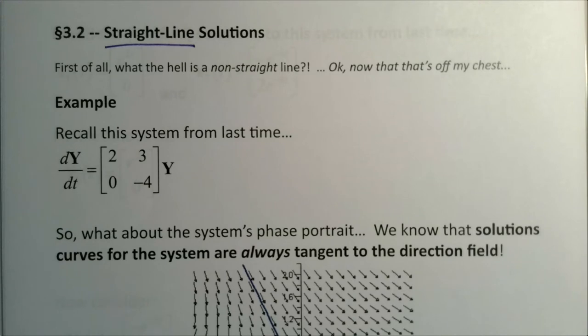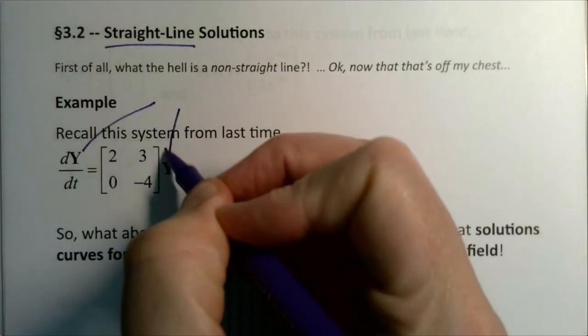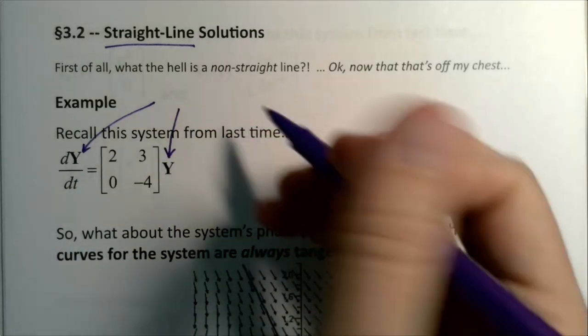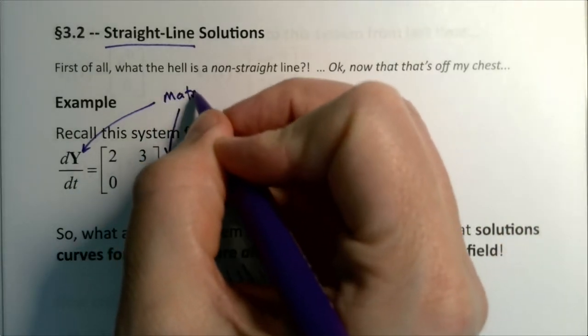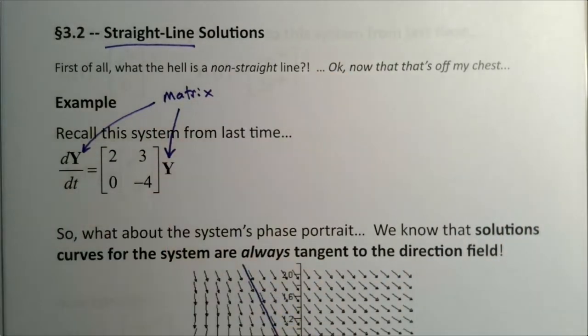We're going to talk more about that in a little bit. But right now we're going to take a look at our old system from last time. We're going to remember that the Y, in this case here and here, that thing is really a matrix.